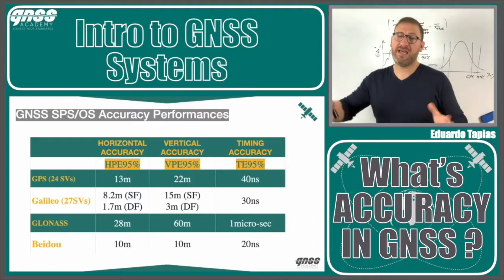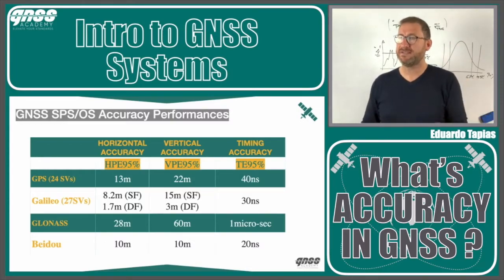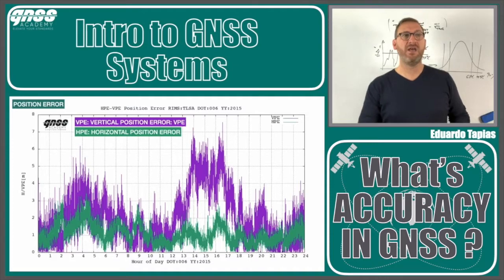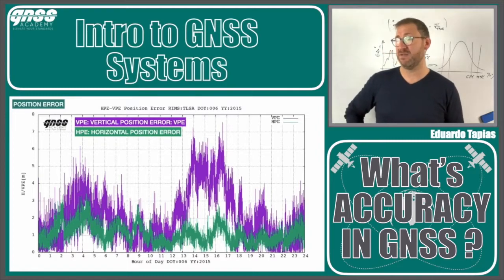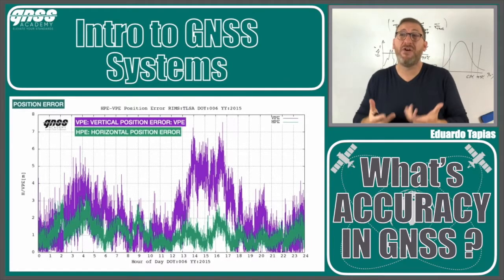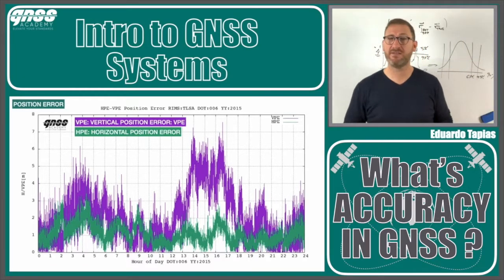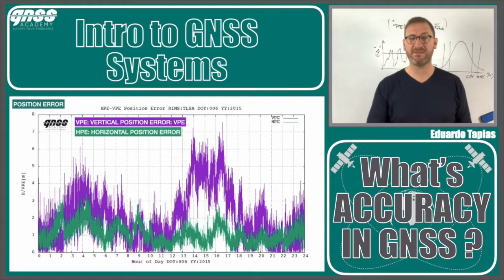In reality, when you use a GPS or Galileo receiver, you get much better results than the published minimums. For example, a GPS standalone SPP solution in Toulouse using 30 satellites — since GPS today operates 32 satellites, not just the nominal 24 — shows results of three to five meters, not the 13 meters they publish. We are significantly better than the published figures.